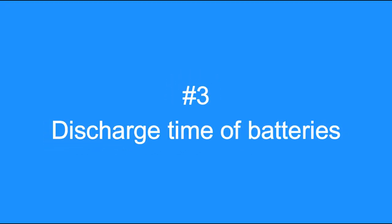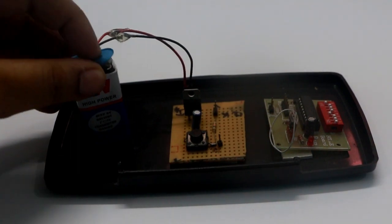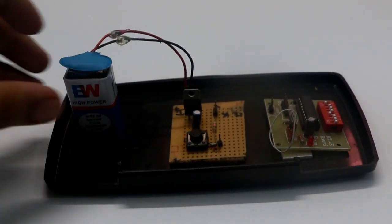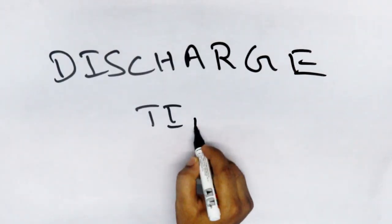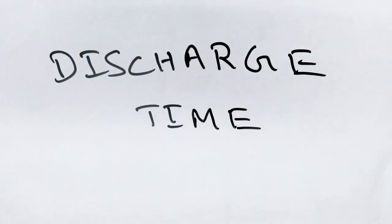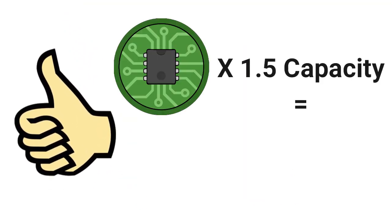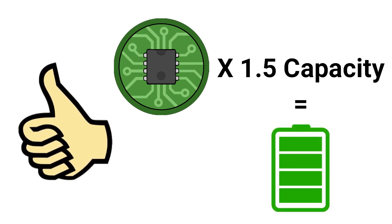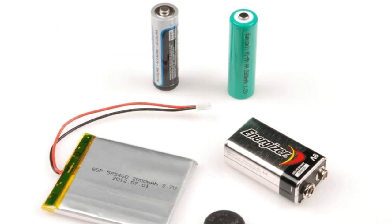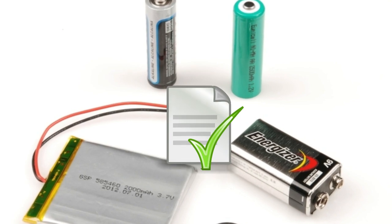Tip number 3: Discharge time of batteries. When you want your design to be mobile, you need to power it with batteries. The most important step is to calculate the discharge time of a battery. If you attempt to discharge the battery beyond a defined level, your battery will be permanently damaged. As a rule of thumb, you should always choose a battery with 1.5 times more capacity than your circuit's actual consumption, though this may slightly vary with battery chemistry, so check its datasheet.